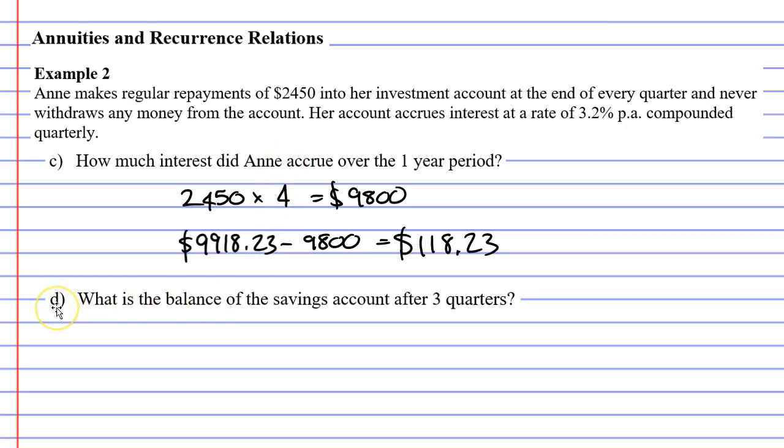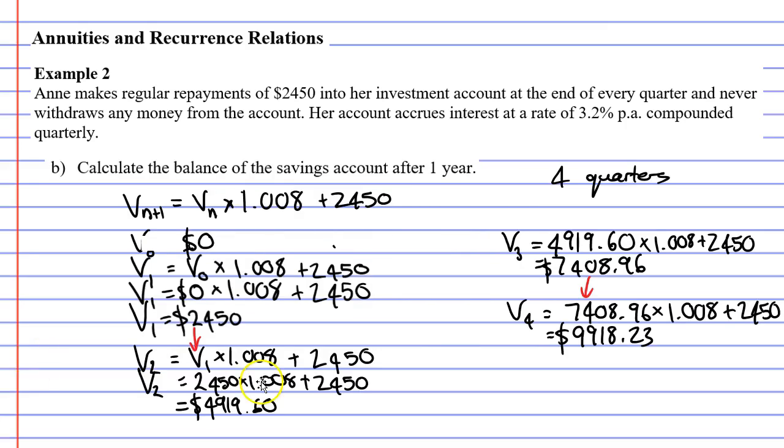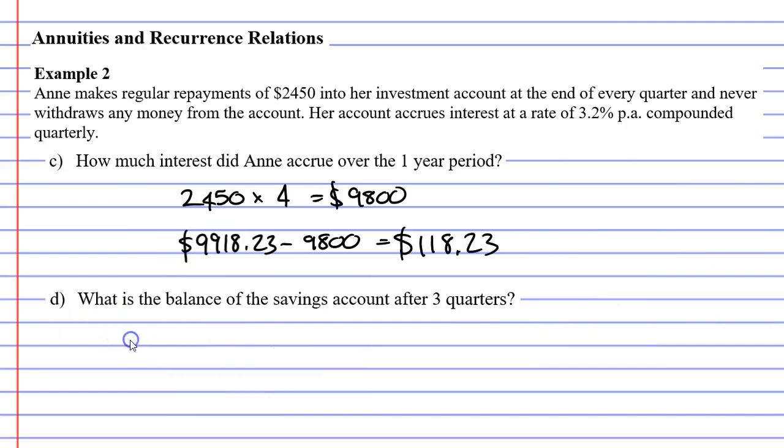Let's now move on to question D. It says, what is the balance of the savings account after three quarters? And that's a really easy one to answer. If we look back at the previous screen, V3 tells us the value of our account after three quarters, which is $7,408.96. That is our solution for part D. Anyway, that concludes example two. Remember to read the description below for links to work booklets that relate to this video.